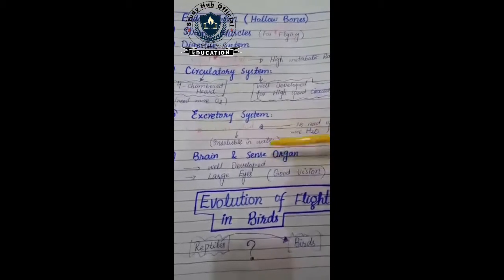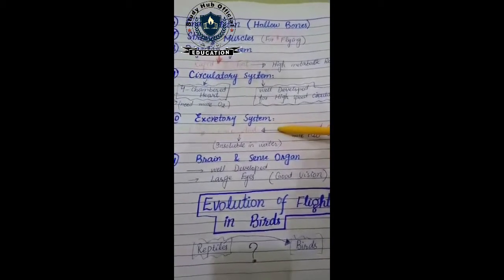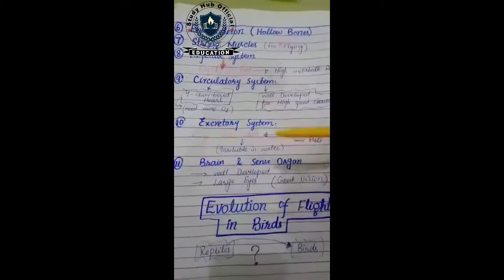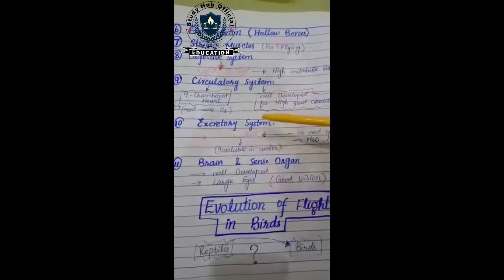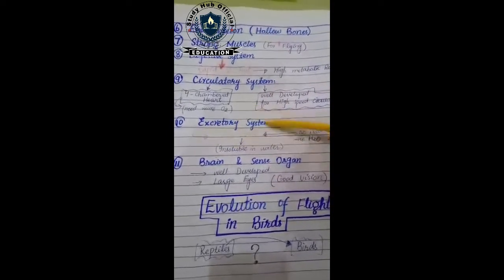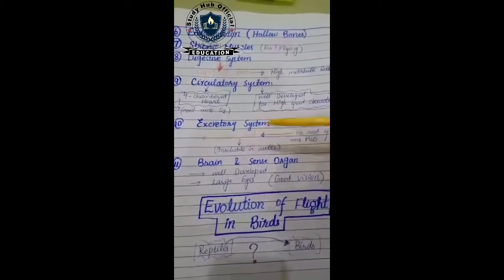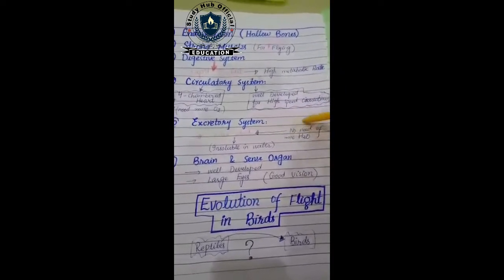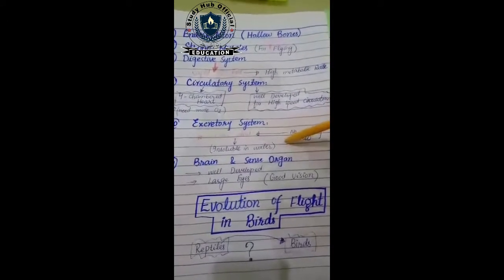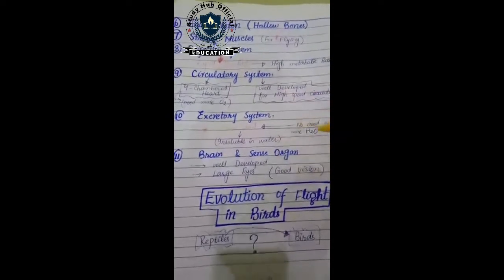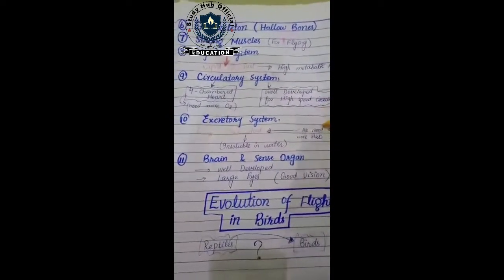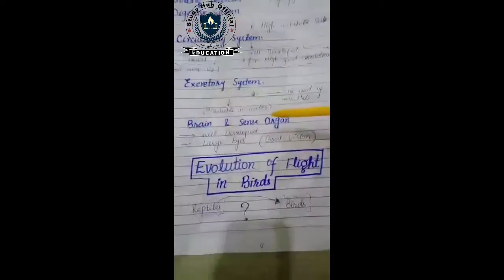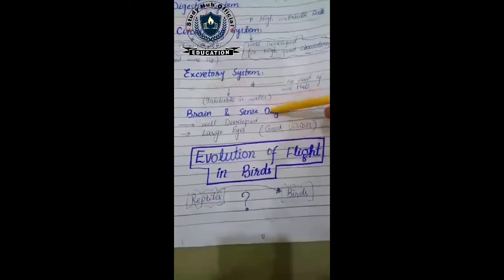The next character is excretory system. To release waste products — whether urea, water, or uric acid — some medium is needed. In birds, uric acid is the excretory product. The benefit of uric acid is that it does not need much water to dissolve — it is insoluble in water. Since their body is light in weight, they cannot carry excess water, which is why their excretory product is uric acid.